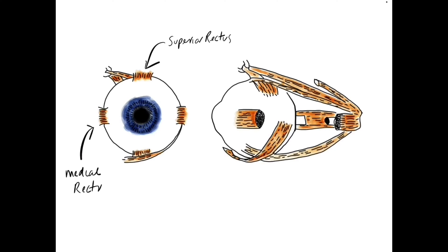Next up we have the medial rectus — a very straightforward muscle with one simple movement: adduction, that's movement towards the nose. Its counterpart is the lateral rectus muscle, again very straightforward — this is all about abduction, movement away from the nose.